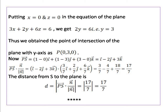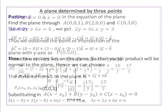Now we can find vector PS, which equals i - 2j + 3k. Then (vector PS · vector n) / |vector n| = 17/7. So the distance from S to the plane is d = |vector PS · vector n| / |vector n| = |17/7| = 17/7.